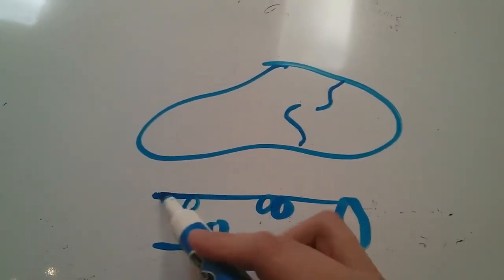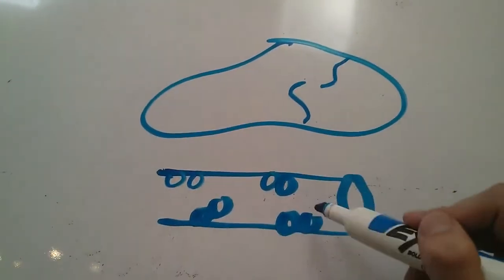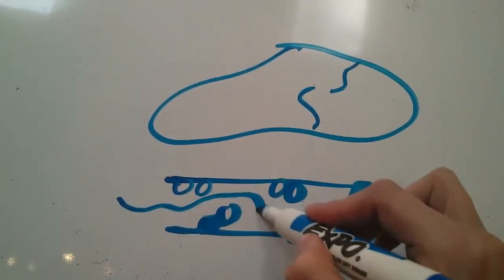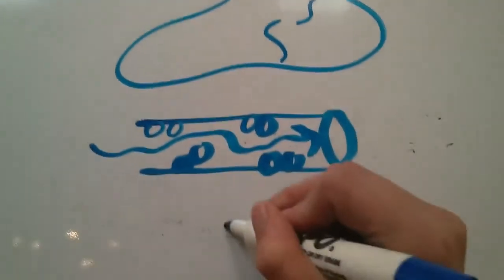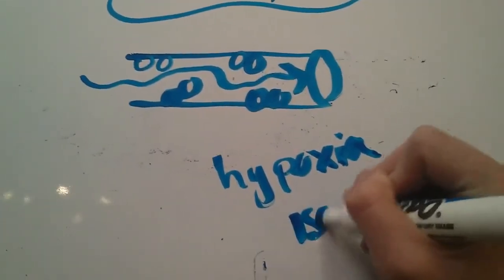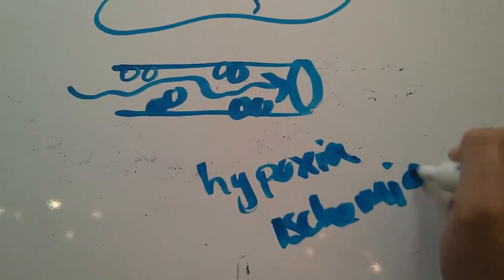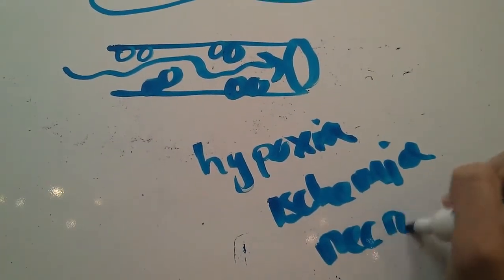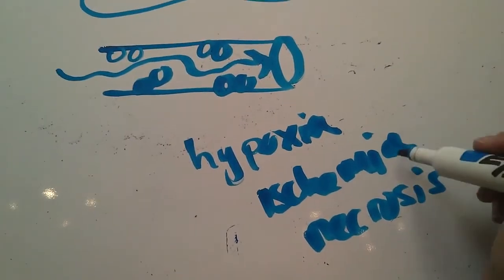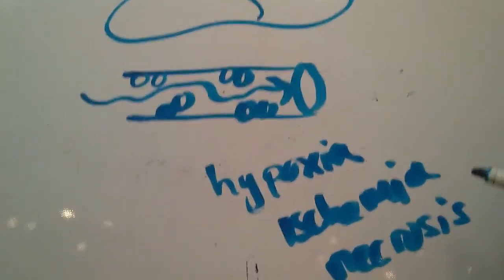They're going to start releasing those clotting factors because the brain thinks it's bleeding out. Eventually, all those clotting factors building up in the vessels in the liver, it's going to make it harder for the blood to flow through, which is going to lead to hypoxia and eventually ischemia of the liver tissue, which leads to necrosis. Ischemia just means a lack of blood flow or oxygen to the tissues, and then necrosis is the death of those tissues.